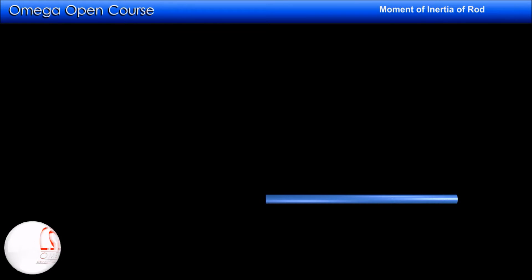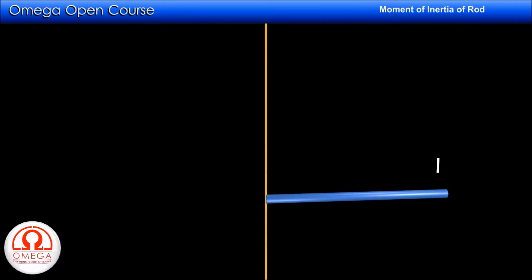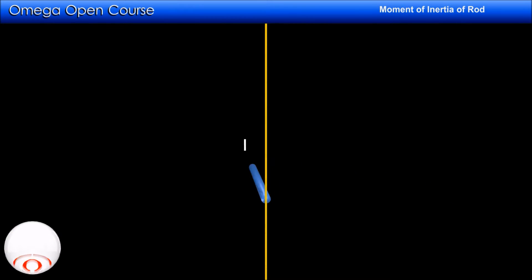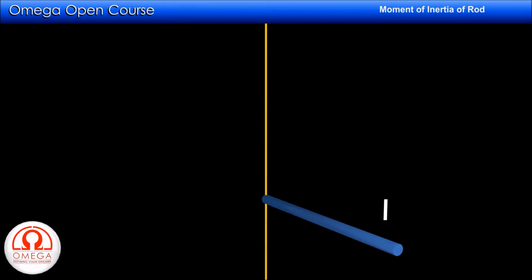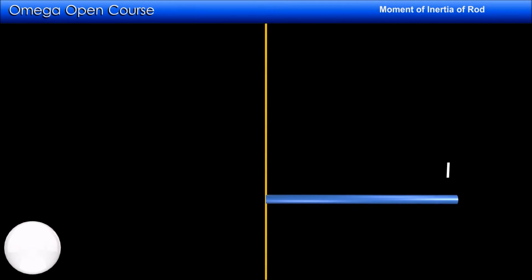Let us consider a rod of length L and mass M. Let us assume its moment of inertia about the axis perpendicular to it and passing through its end is I. This moment of inertia is independent of the orientation of the rod, meaning you can rotate the rod about this axis but its moment of inertia will not change.